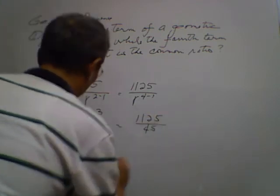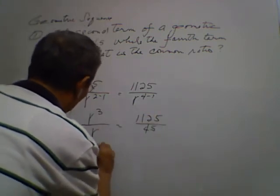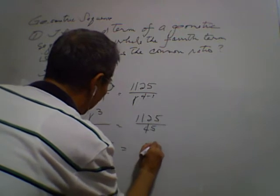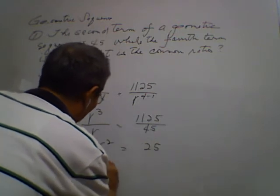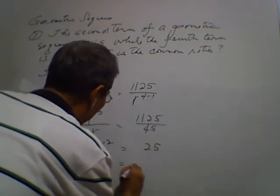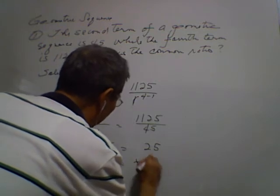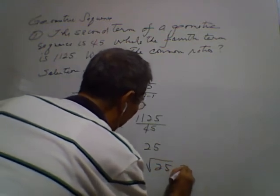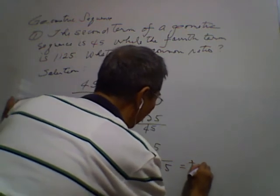So, dividing this, we have r squared is equal to 25, and r will be equal to plus or minus the square root of 25, and that is equal to plus or minus 5.